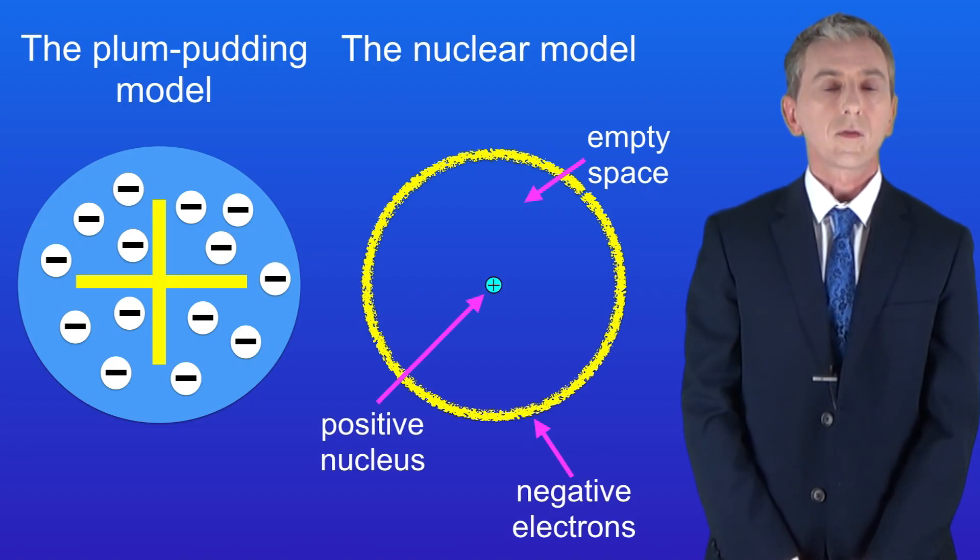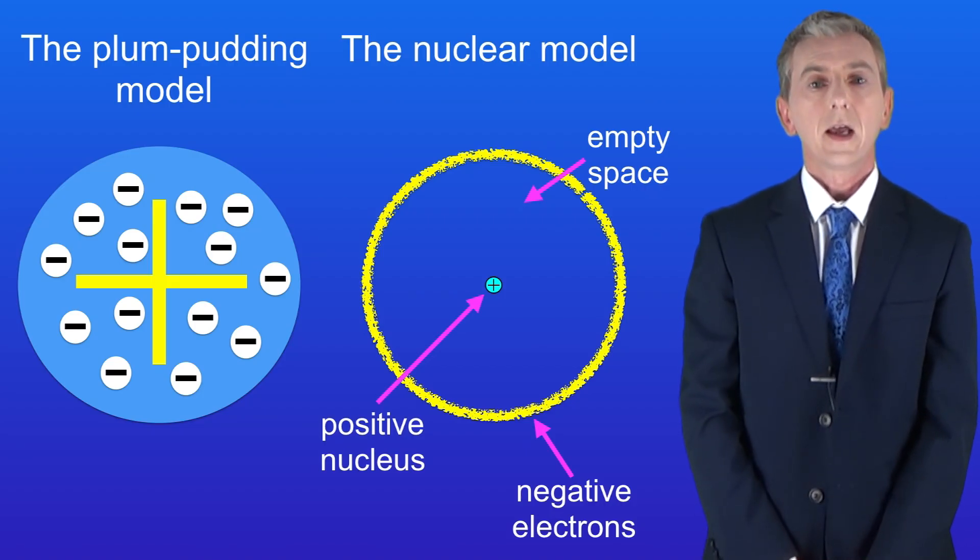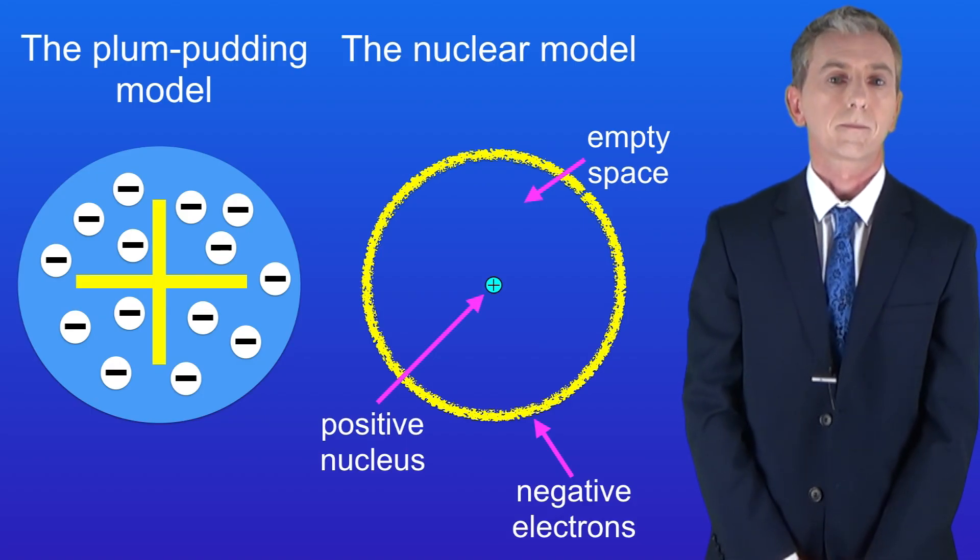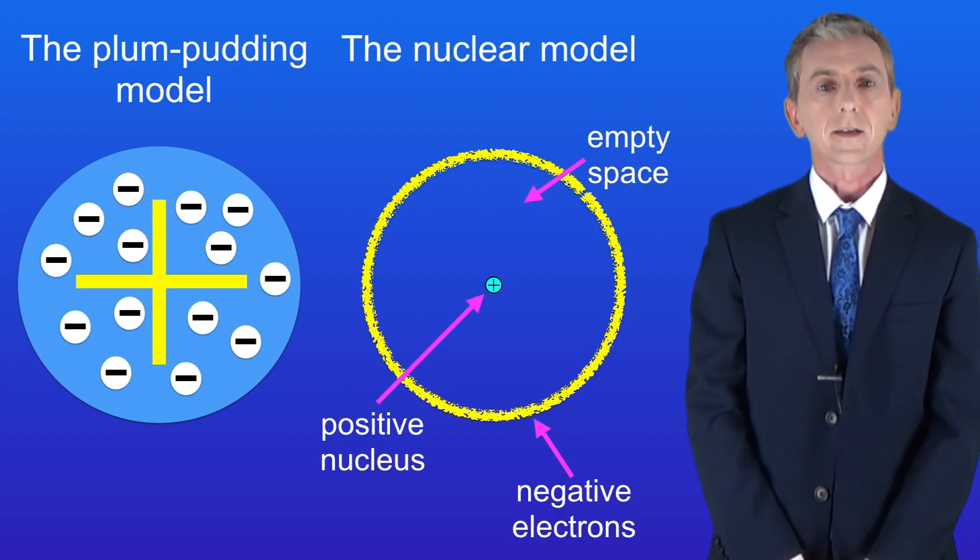In the nuclear model most of an atom is simply empty space. In the centre we've got a positive nucleus and that contains most of the mass of the atom. Around the edge we find negative electrons.